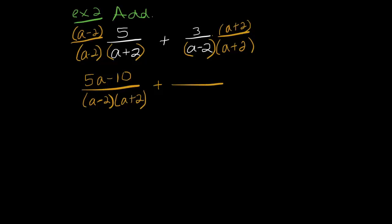The top is not going to be in factored form once I finish this step. So I'm going to continue. So on this one, I'd get 3a plus 6 over a minus 2 times a plus 2. All right, because now I'm going to add these.